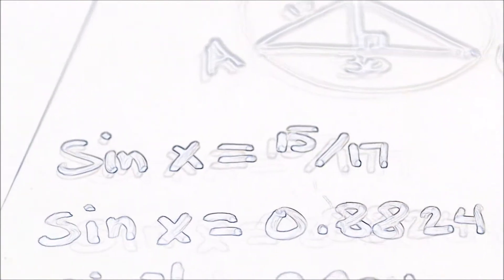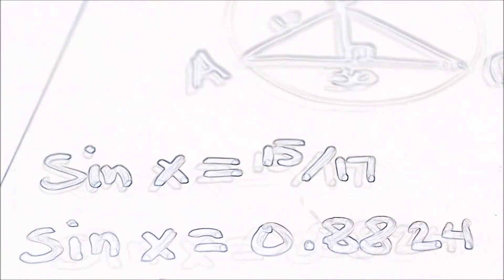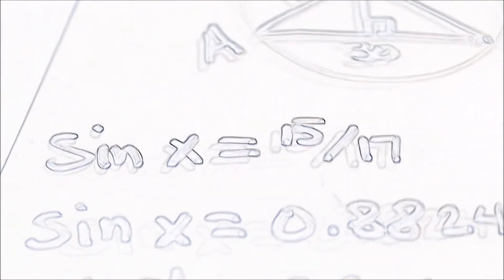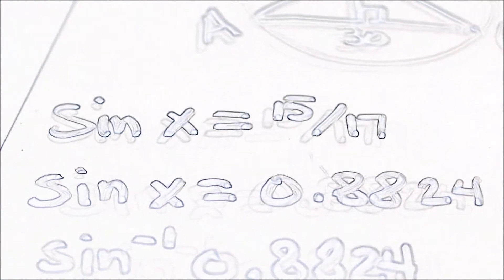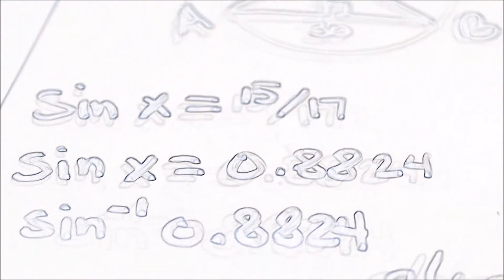Once you get that, you should get 0.8824. Then you look on your paper and you look for sine of the angle. And you might not be able to see it, but it says 0.8824 and the angle is 62.